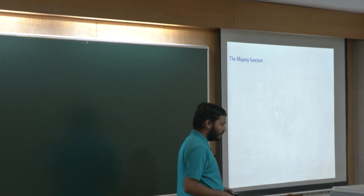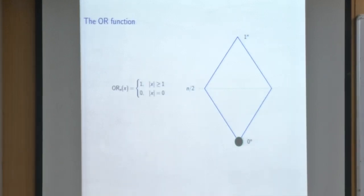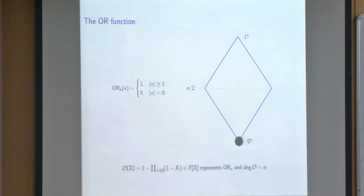Starting with examples: the majority function takes value 1 when the input weight is at least n/2 and 0 otherwise. The degree of majority as a polynomial is Ω(n). The OR function takes value 0 at the all-zeros input and 1 everywhere else, and as is known, its degree is N.